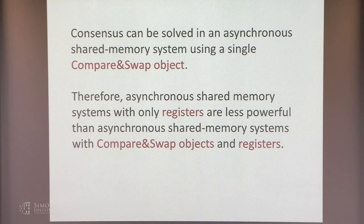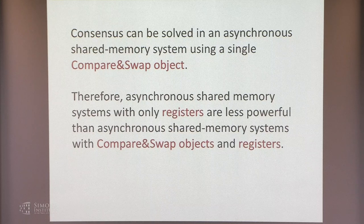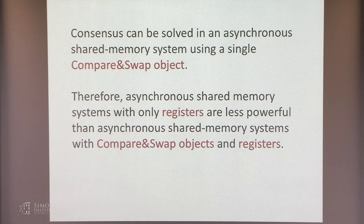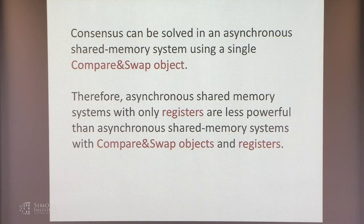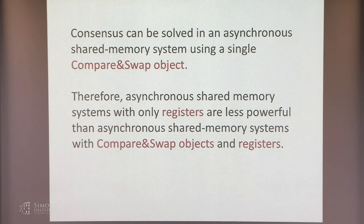Valency arguments can be adapted not to compare-and-swap objects, but to other kinds of objects — showing they can solve consensus for some number of processes but not more. For example, a test-and-set object can solve consensus among two processes but not three. Similar kinds of valency arguments apply there.